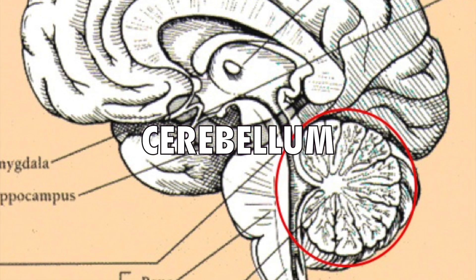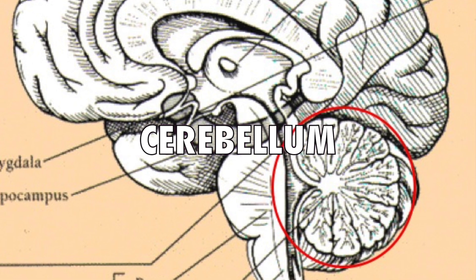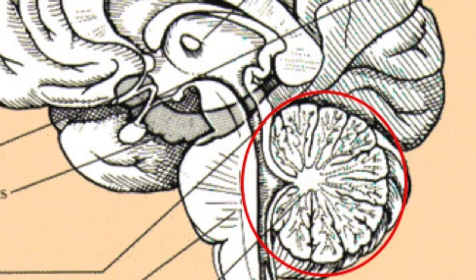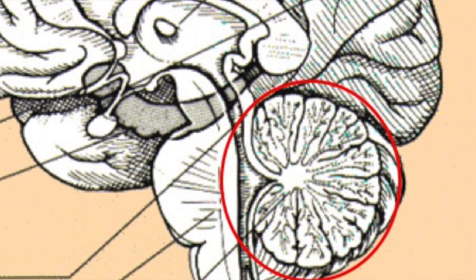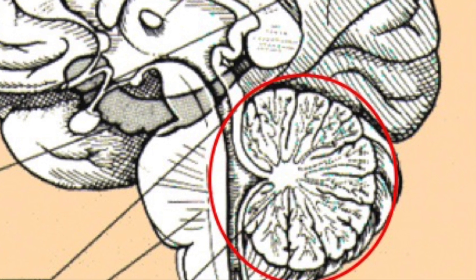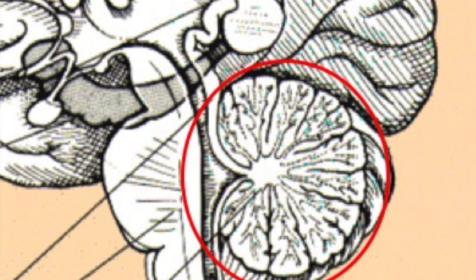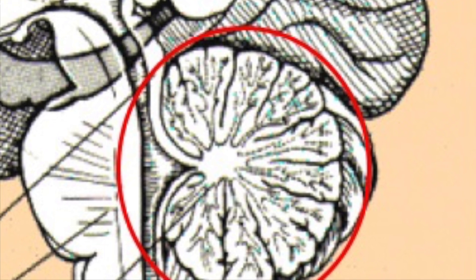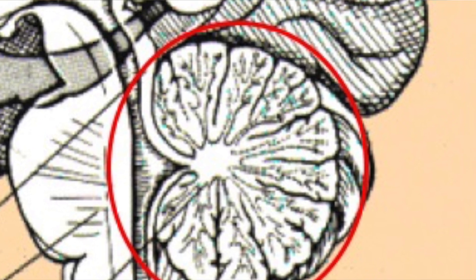The last brain stem structure I like to review is the cerebellum, circled in the back of the brain. Cerebellum is Greek for little brain, because that's kind of what it looks like. Like the basal ganglia, the cerebellum helps smooth out motor movements and helps us with coordination and balance. Lesions to the cerebellum can cause us to stumble and walk like we're drunk, or to be unsteady with hand movements, or incoordinated.